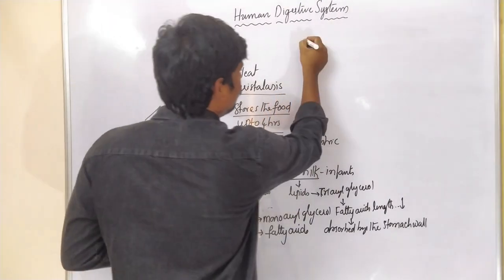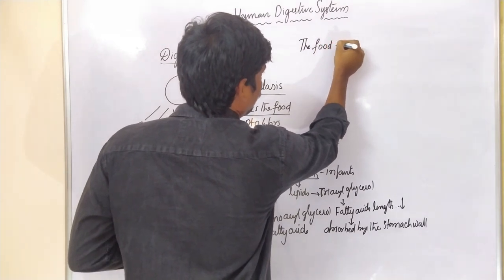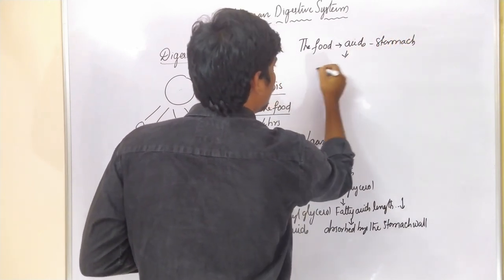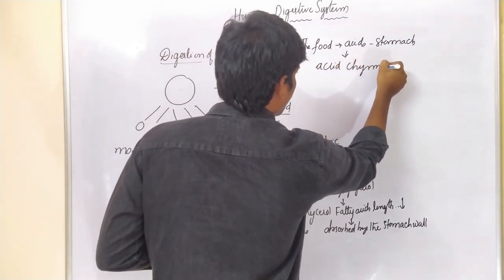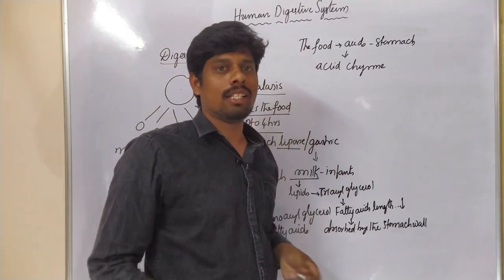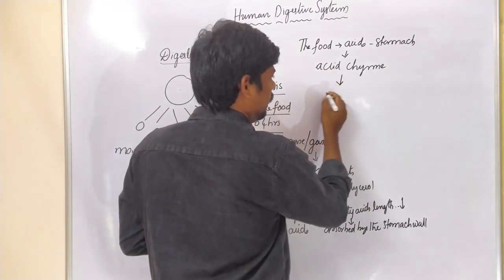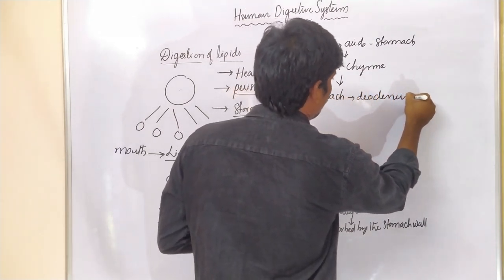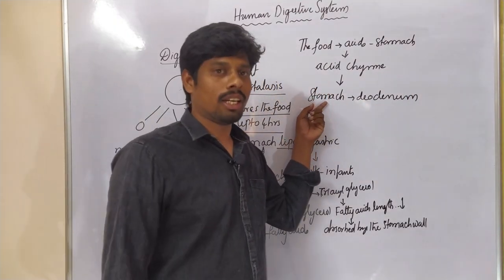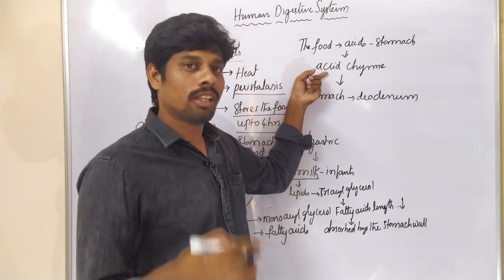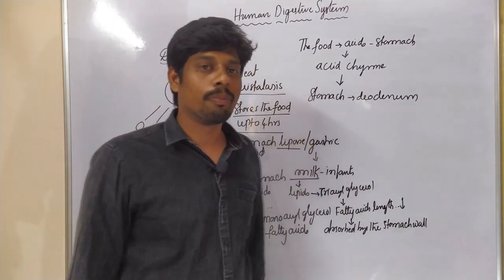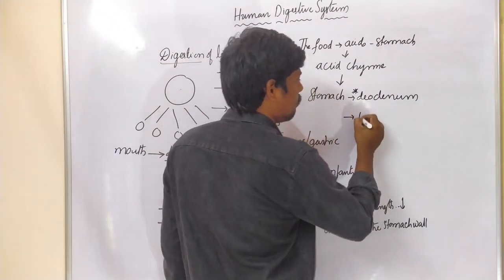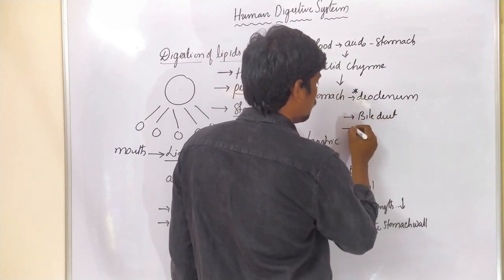Next, after the stomach, the food mixes with the acids in the stomach — this is called acid chyme — and enters the duodenum. The stomach connects with the duodenum, so all food items present in the stomach must enter the duodenum. The duodenum is a very important part of the digestive system because it connects with the bile duct and also the pancreatic duct.